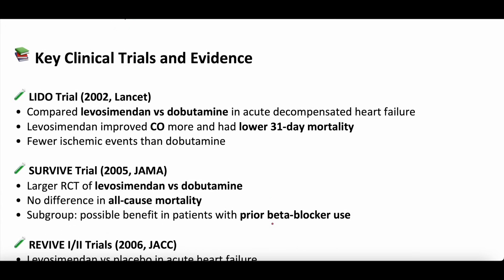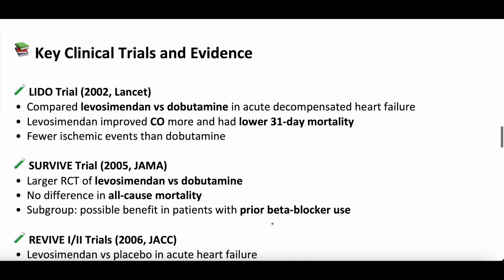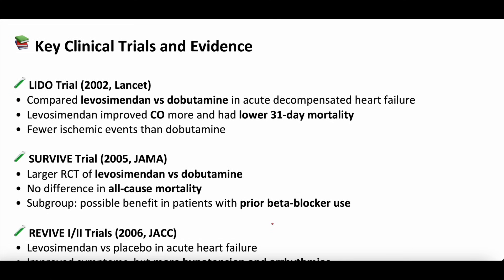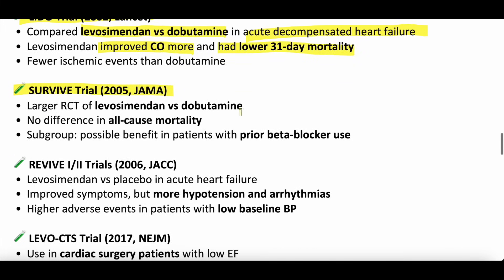Some highlights from the clinical trials. The Lido trial from 2002, published in Lancet, compared levosimendan versus dobutamine in acute decompensated heart failure — levosimendan improved cardiac output and had lower 31-day mortality. The SURVIVE trial in 2005 in JAMA was a large RCT of levosimendan versus dobutamine — no difference in all-cause mortality, but possibly a benefit in patients on beta-blocker use, as dobutamine requires functioning beta-1 receptors.